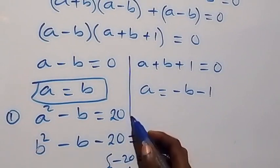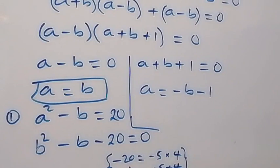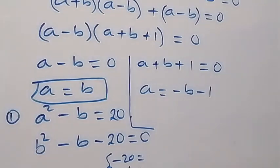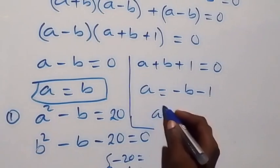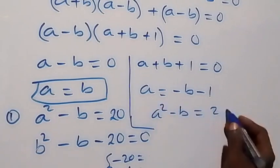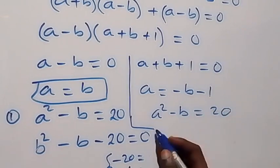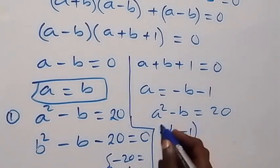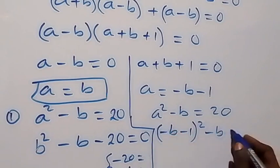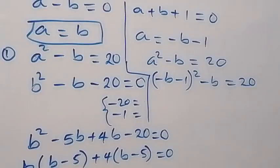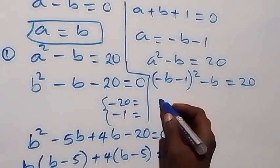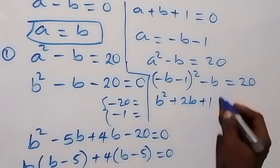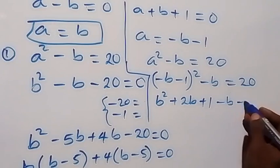Now for Case 2, let's solve for a and b using the same equation 1: a squared minus b equals 20, but here a equals minus b minus 1. Substituting, we get (minus b minus 1) squared minus b equals 20. Expanding, this becomes b squared plus 2b plus 1 minus b, and taking 20 to the other side gives minus 20.